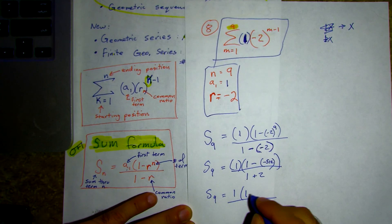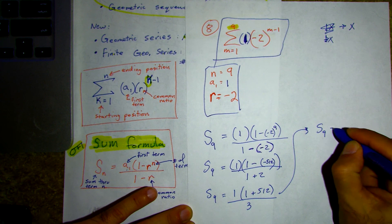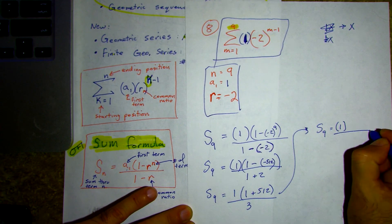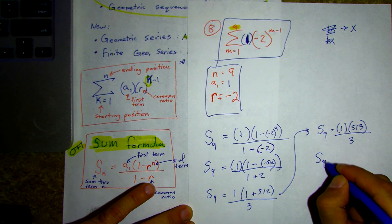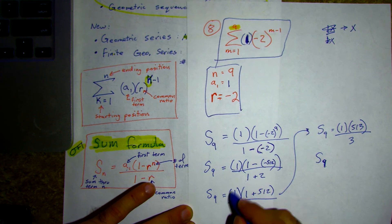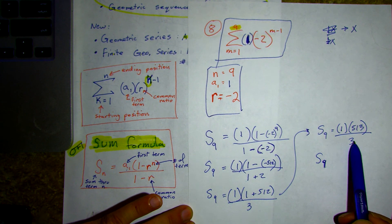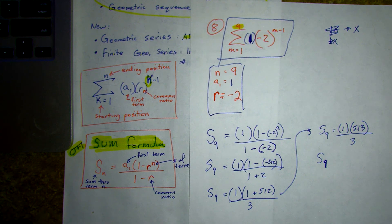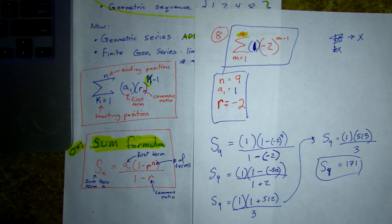So S sub 9 is 1 times 513 over 3. I didn't need to carry that 1 through the problem since one times anything is itself, but I'll include it for clarity. Taking 513 and dividing by 3 gives us 171. This example was good to show because it reiterates that when a sub 1 is 1, they leave it out — a sub 1 was 1, so they just left it out. Go ahead and screenshot that if you need it — that's number 8 from the homework.